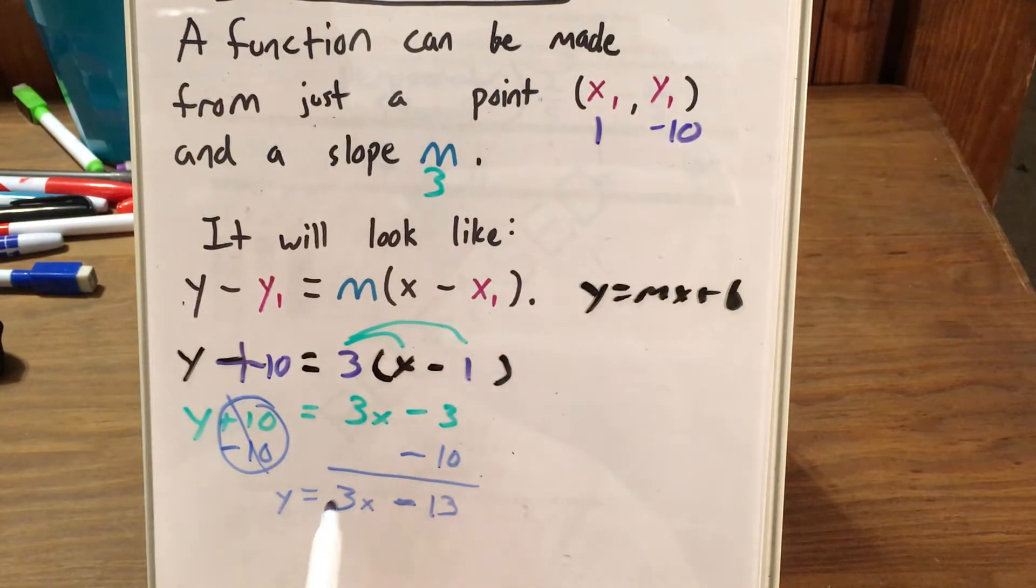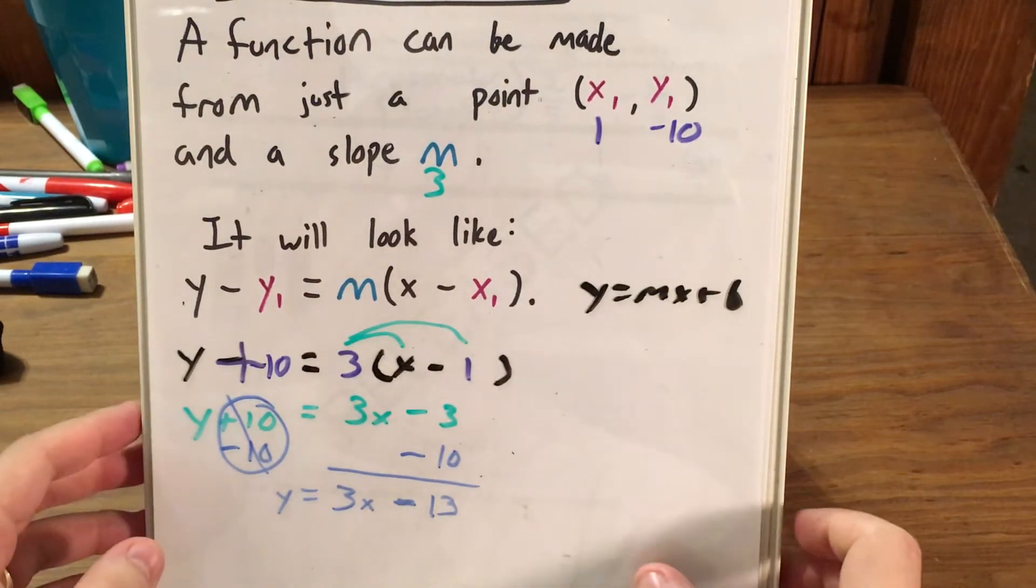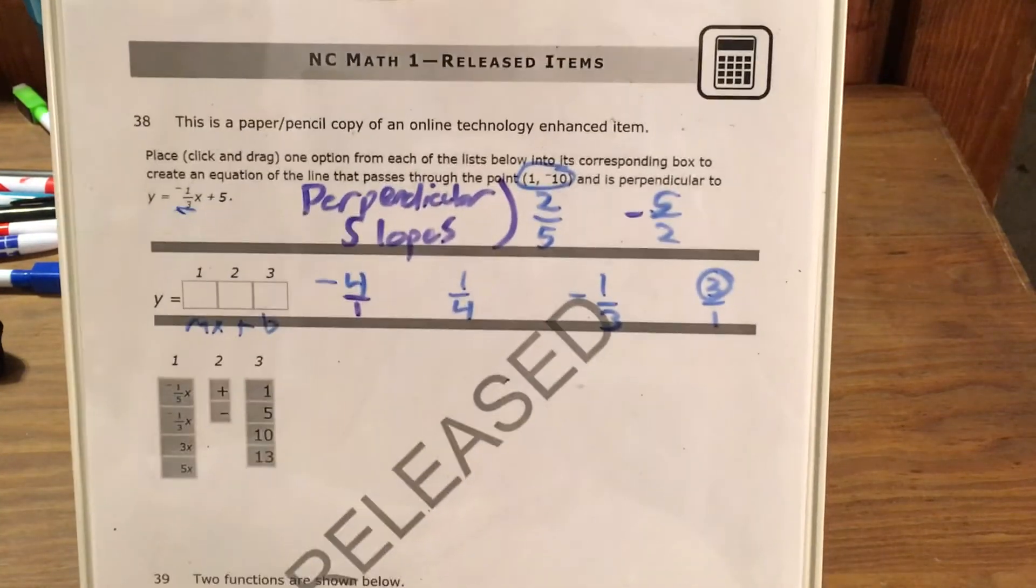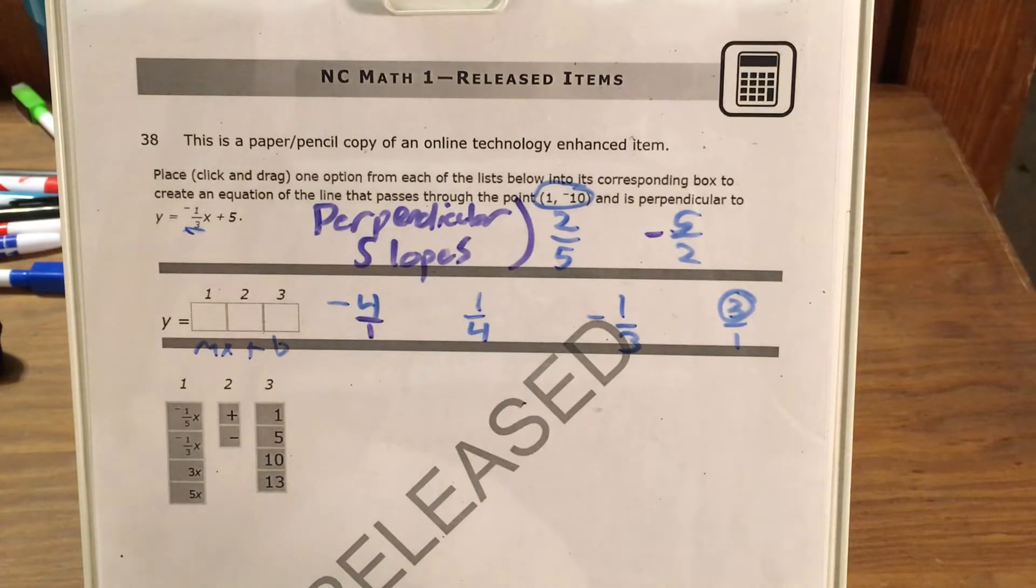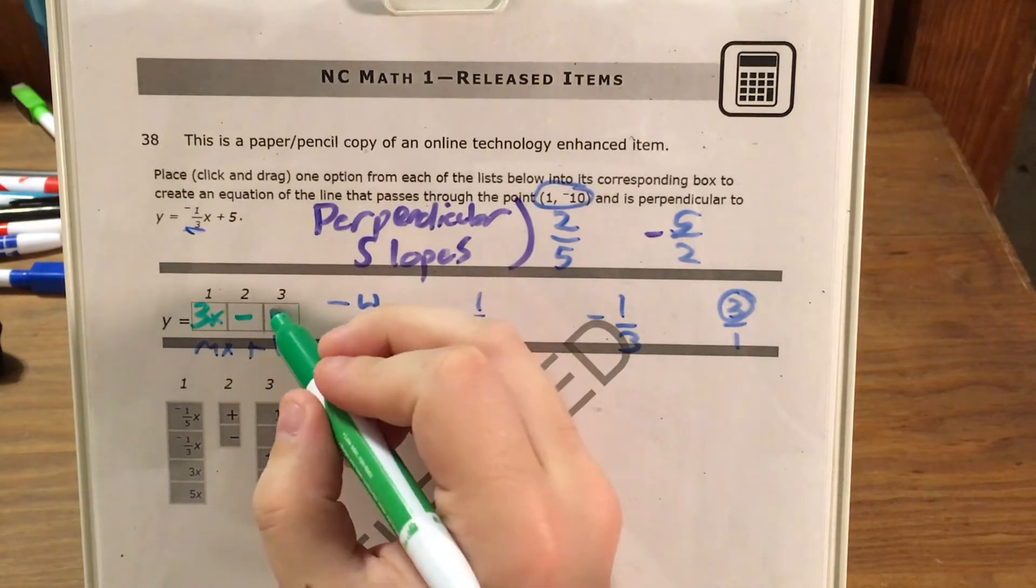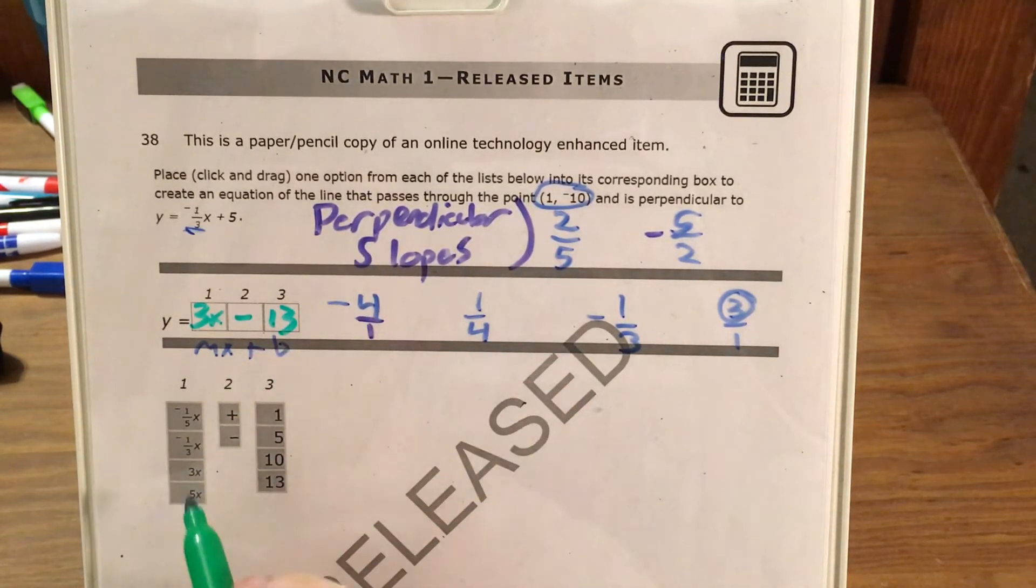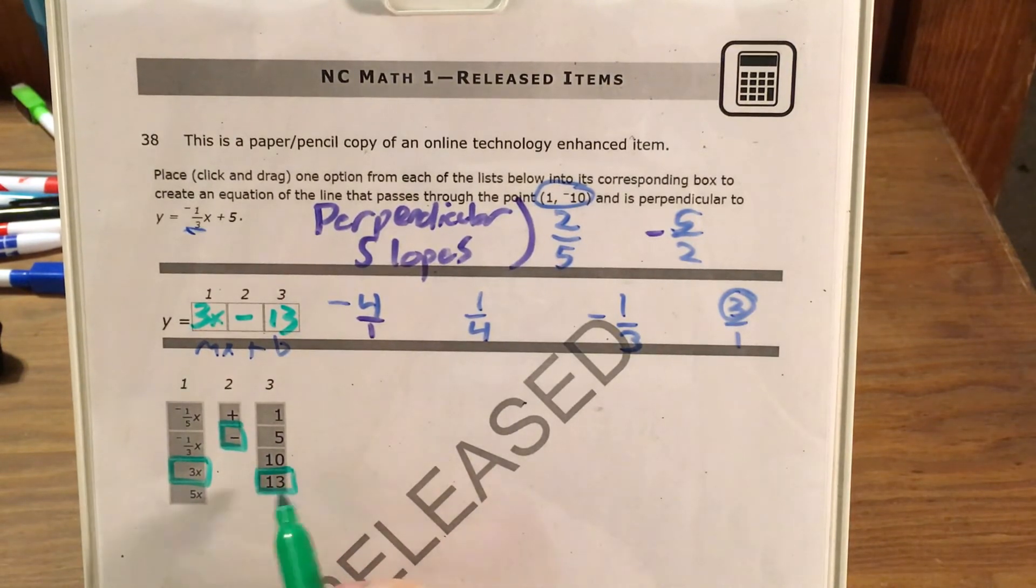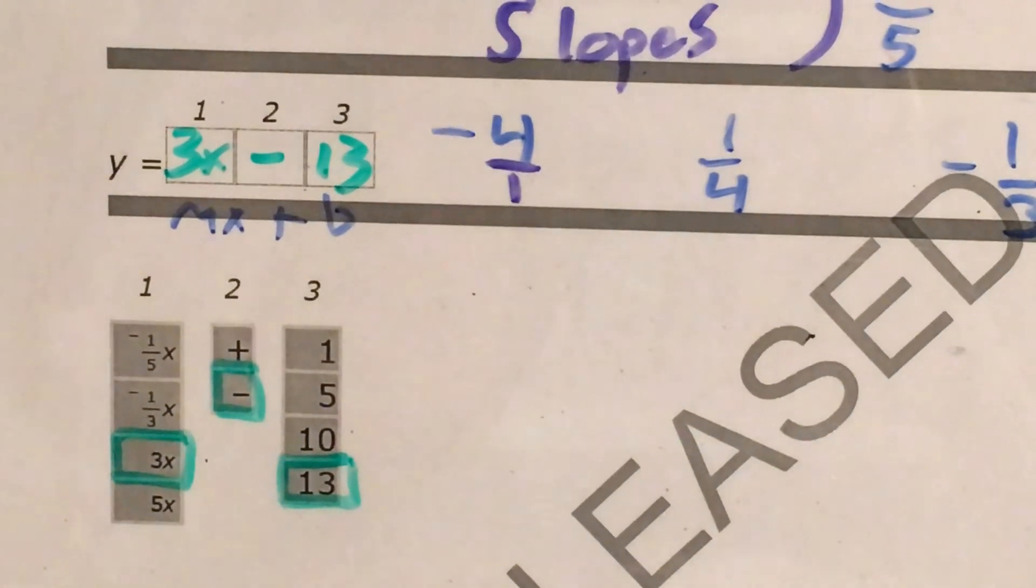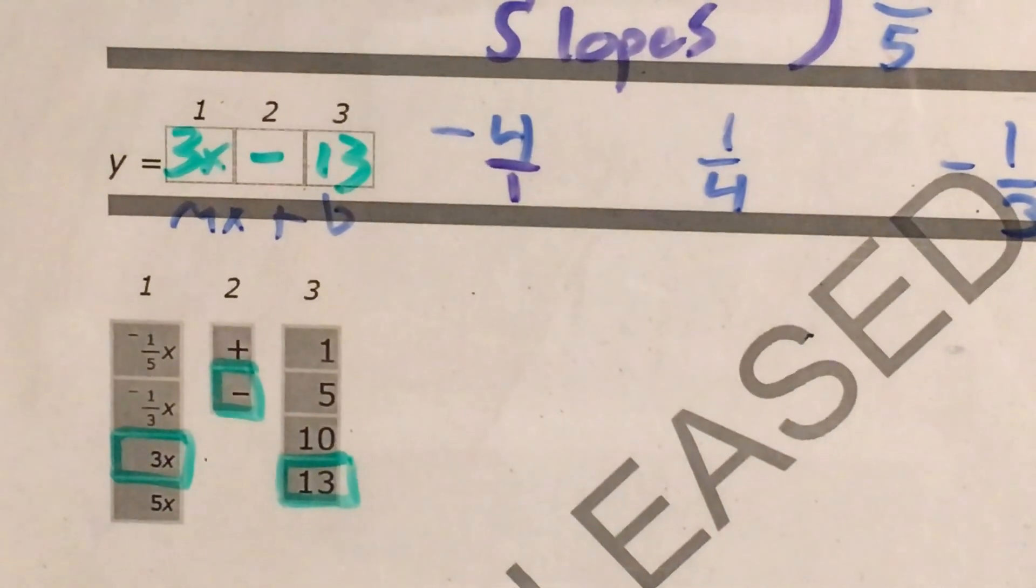So this is y equals 3x minus 13. Now that I figured this function out, I just need to know which of my choices I would have to use to answer this question. So y equals 3x minus 13 was my function, which means I would pick the 3x box, the minus box, and the 13 box from the possible boxes that it gave me. Let me just zoom in on this so it's a little more clear what I did here. That is the final function, y equals 3x minus 13.